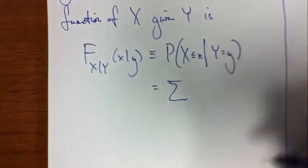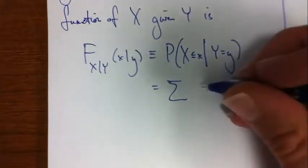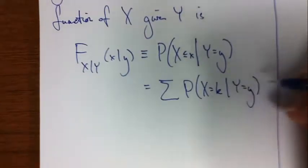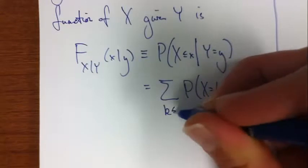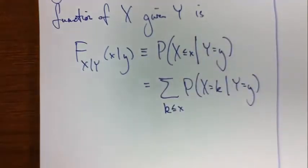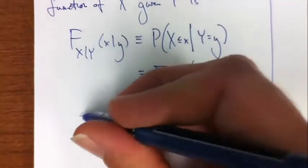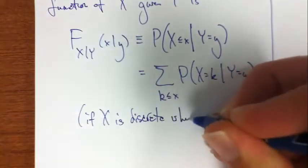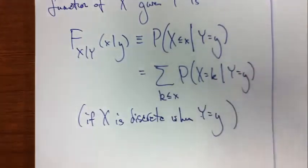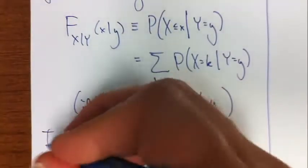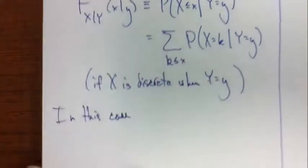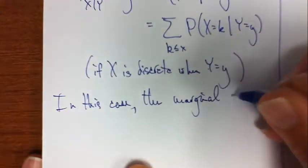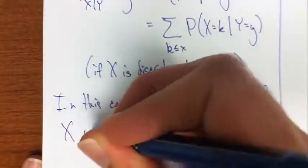These conditional random variables or these conditional distributions are distributions too. We're just setting y equal to this. Now x behaves a certain way. And you can calculate this as follows by our probability axioms, but just applied in the conditional sense. It's the chance that x takes on the value of little k, given that y equals y, for all values of k less than or equal to x. And this is if x is discrete when y takes on the value of little y.